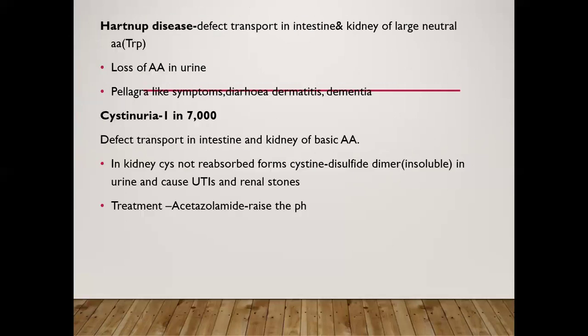In Hartnup disease, there are defects in the transport of large neutral amino acids in the intestine and kidney, resulting in loss of amino acids in the urine. Symptoms include pellagra-like symptoms, diarrhea, and dementia.